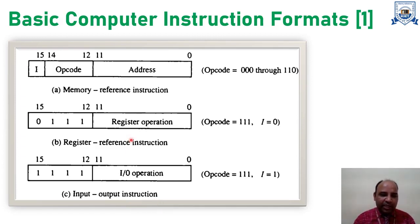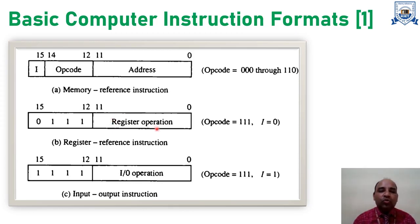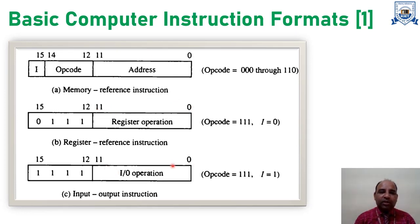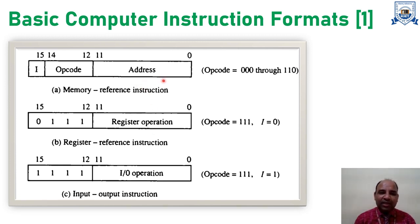One very important point to note here: for both register reference instructions and input-output instructions, bits 0 to 11 are not used for the address. Instead, in both cases, these 12 bit positions are used for the type of operation — they work like an extended opcode rather than as an operand, unlike in the memory reference instruction, since register reference and input-output instructions do not involve memory addresses or memory locations.